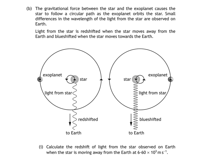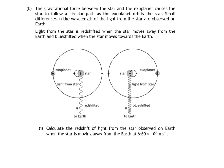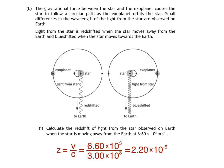There are actually two equations which allow us to calculate red-shift. We're using this one here. Red-shift Z is calculated by dividing the speed of the star, V, by the speed of light, C. That gives us 6.60 times 10 to the power of 3 divided by 3.00 times 10 to the power of 8, which is 2.20 times 10 to the power of negative 5. And remember, red-shift has no units.